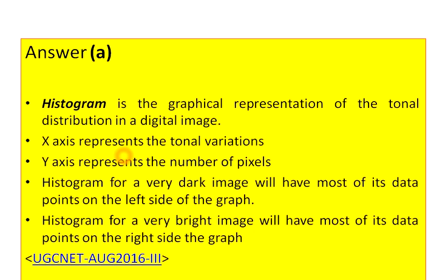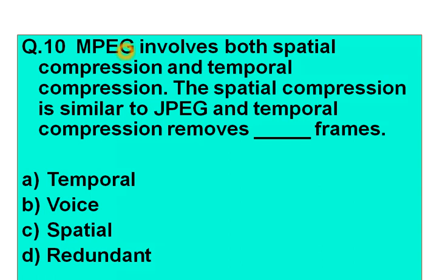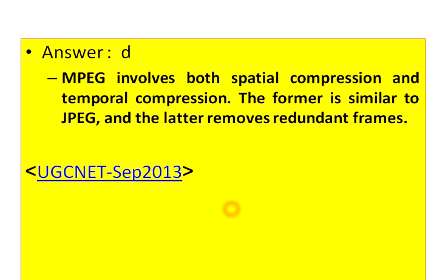Question number 10: MPEG involves both spatial compression and temporal compression. The spatial compression is similar to JPEG, and temporal compression removes — fill in the blank — frames. Option A: temporal. Option B: voice. Option C: spatial. Option D: redundant. The correct answer is option D. MPEG's temporal compression removes the redundant frames. This question was asked in UGC NET examination September 2013.